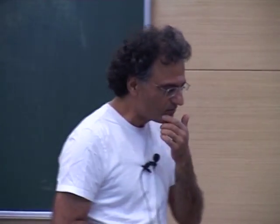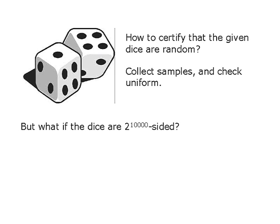I'll talk about how to generate randomness in a more certifiable manner. This is joint work with my former student Tomah Vidic, who is now at MIT. So what's the main question? We are given some source of randomness and we want to certify that the output is truly random, meaning it's independent and identically distributed.